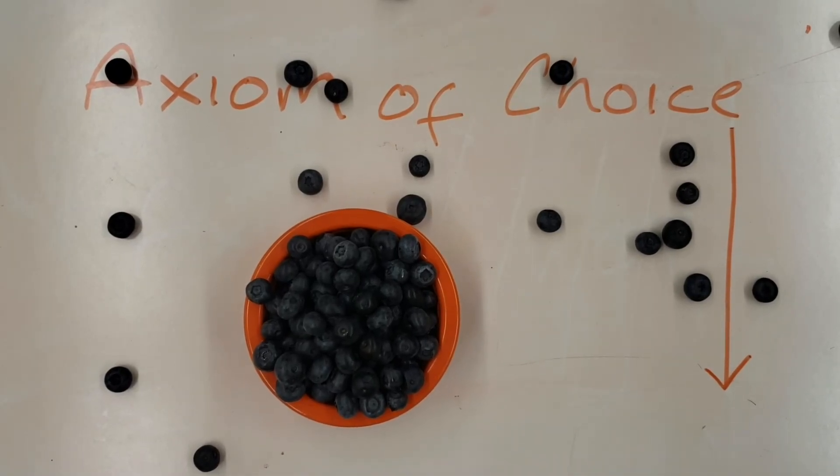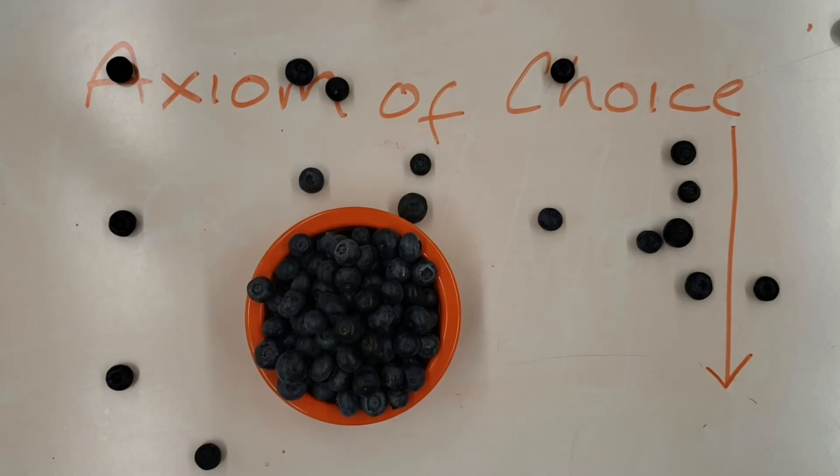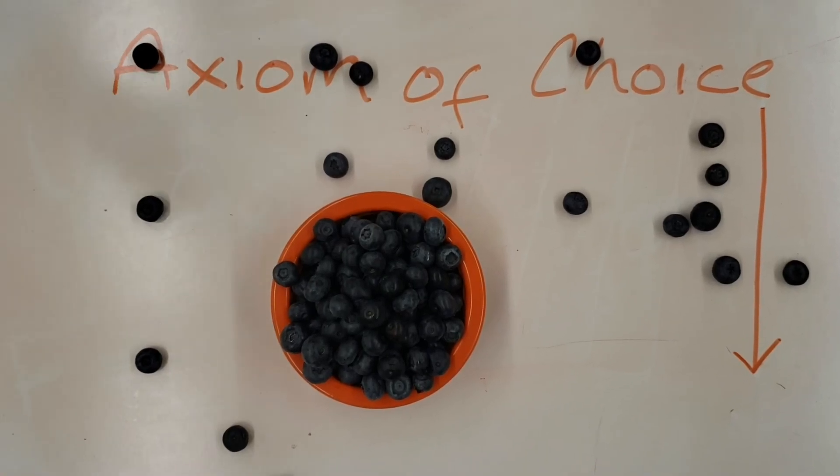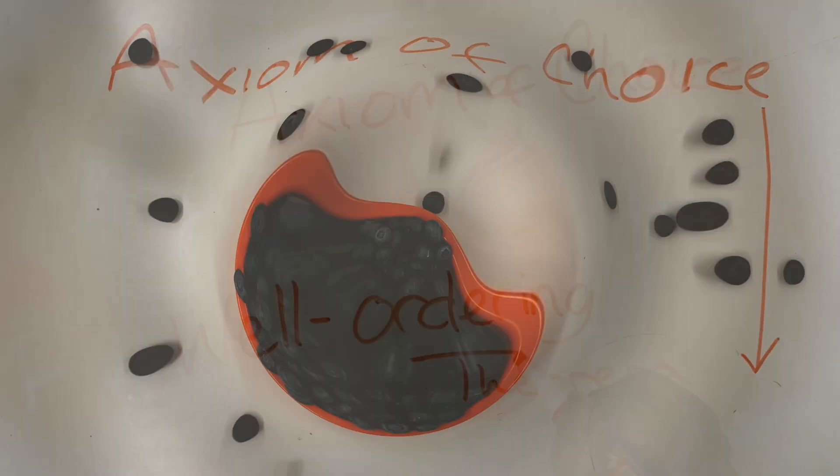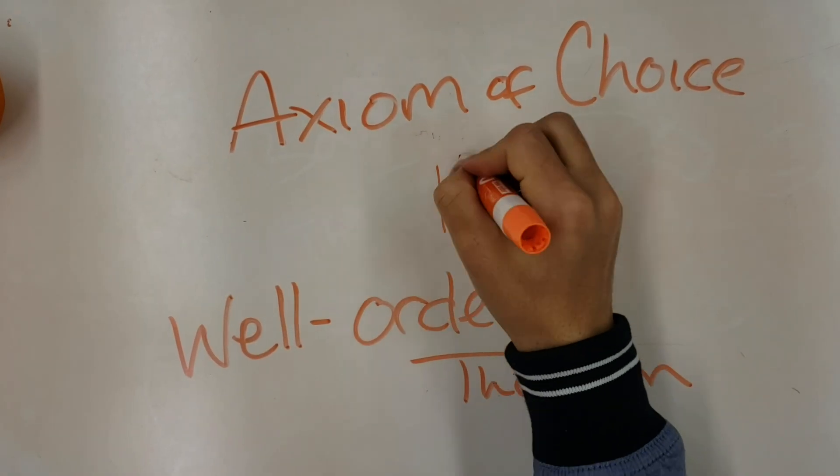The axiom of choice is that patience and system that allows us to choose arbitrarily from this infinite number of sets of blueberries. It follows that the axiom of choice and the well-ordering theorem are logically equivalent.